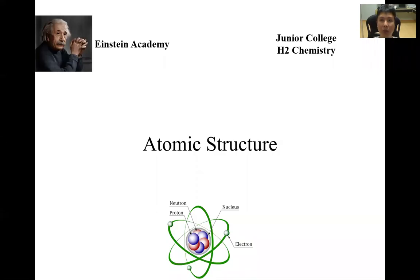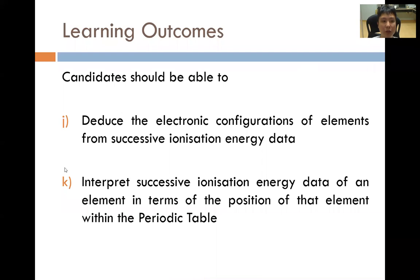Hello one and all, welcome to another online video by Einstein Academy. In this video, we will be looking at the final two learning outcomes from the topic of atomic structure from the JCH2 chemistry syllabus. Learning outcome J states that candidates should be able to deduce the electronic configurations of elements from successive ionization energy data, while K is to be able to interpret successive ionization energy data of an element in terms of the position of the element within the periodic table.